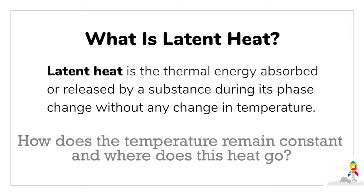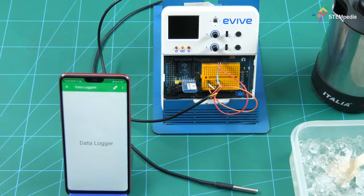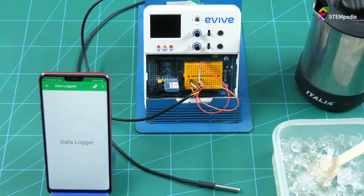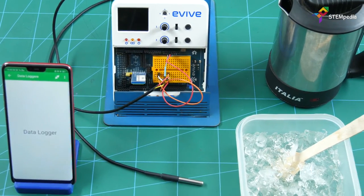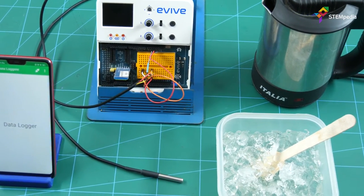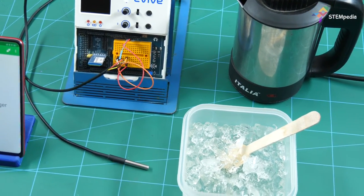How does the temperature remain constant and where does the heat go? Let's find out. For that, we need a kettle, a DS18B20 waterproof temperature sensor, an evive, a smartphone with Dabble installed, and some ice.